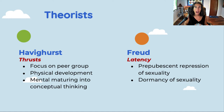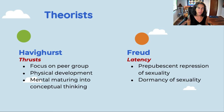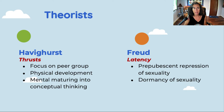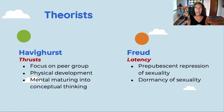Our next theorist is Havighurst, who talks about the idea of 'thrusts' — various stages of his theory. In middle childhood, as Erikson says, you're focused on your peer group. There's a lot of physical development — not the beginnings, but really the refinement of physical development. Kids will start to play organized sports at this age and engage in much more high-level physical pursuits, because they have the coordination, strength, and sensory foundation to build motor competence.